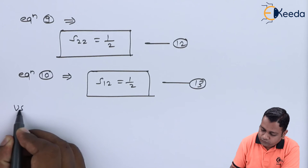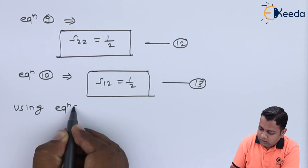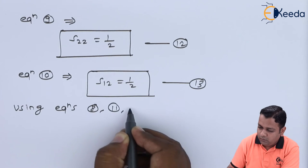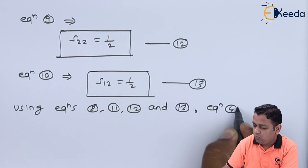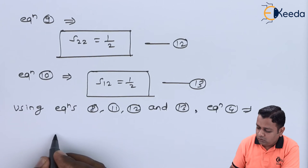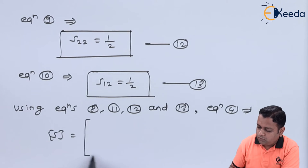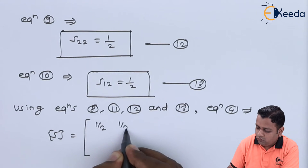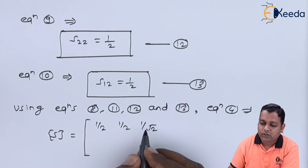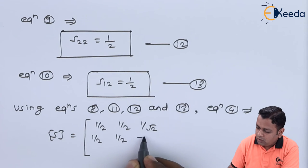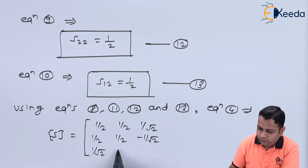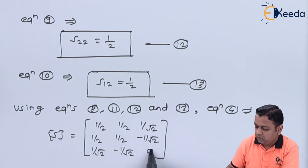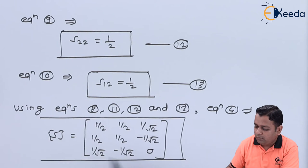Using equations 8, 11, 12, and 13, equation four gives the final scattering matrix for E-plane T: first row [1/2, 1/2, 1/√2]; second row [1/2, 1/2, −1/√2]; third row [1/√2, −1/√2, 0]. This is the very important scattering matrix of E-plane T.